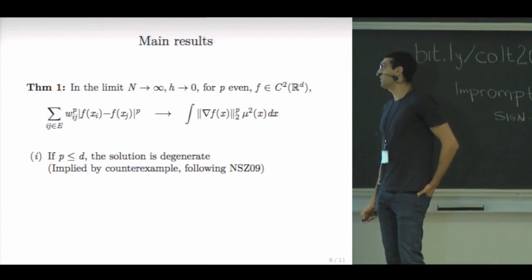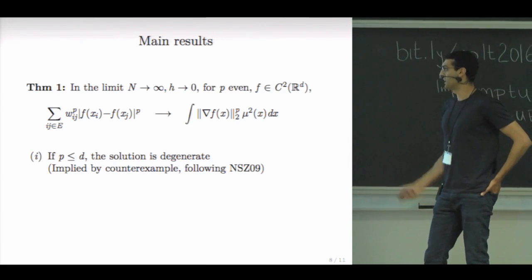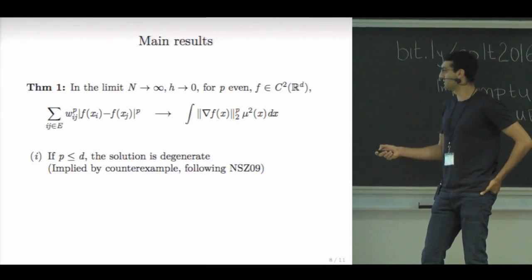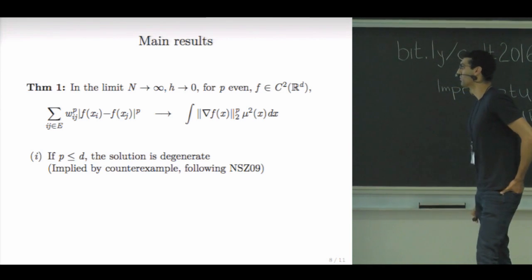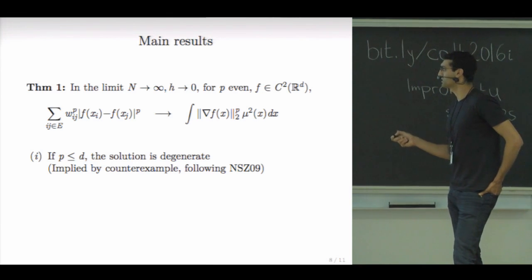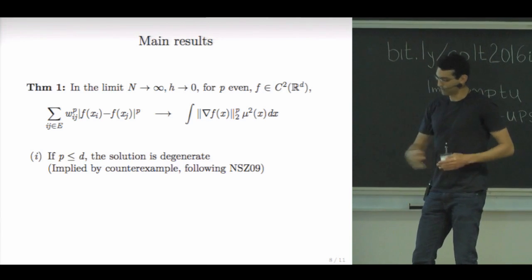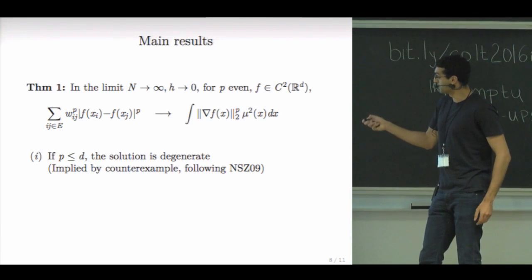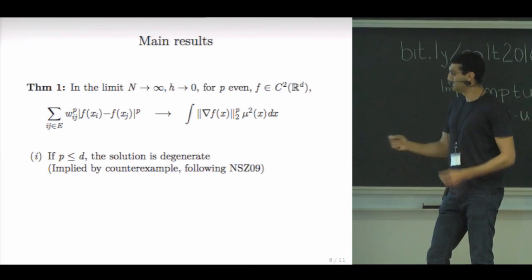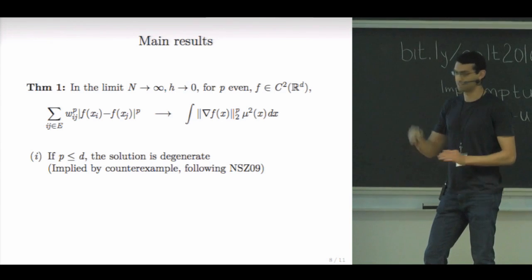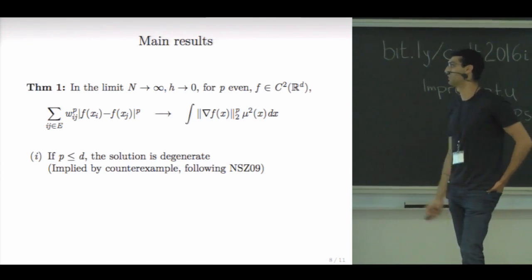So the first main result is that in this limit and for every even P and fixed function F, this discrete P Laplacian converges to this functional that is the integral of the norm of the gradients raised to the power P. And from there, we can deduce a couple of observations that if P is smaller than the dimension D, then I can tell you that the solution is degenerate. And this is applied by a counter example. For example, I can construct a sequence of functions F indexed by some epsilon, such that when epsilon goes to zero, this functional will go to zero since it is positive everywhere. That's the global minimum. And that the sequence of functions is highly spiky. So that illustrates the problem that I've shown in the previous slides.